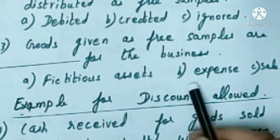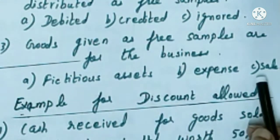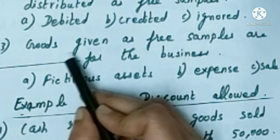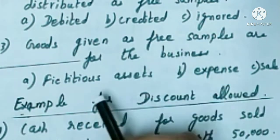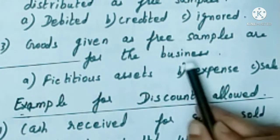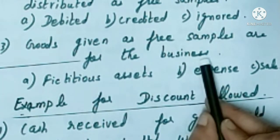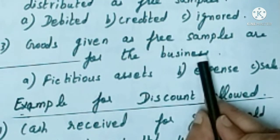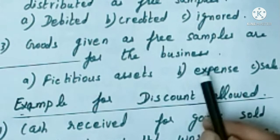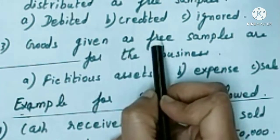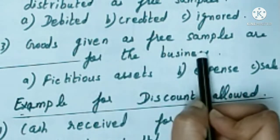What is the answer for this? Goods are given as free samples, so it is like an expense for the business. We already know that it is like an advertisement, and advertisement is an expense. So the answer is: goods given as free samples are an expense for the business.